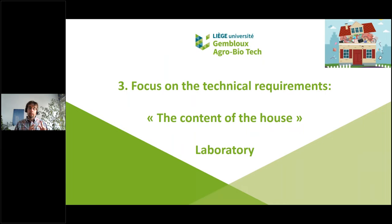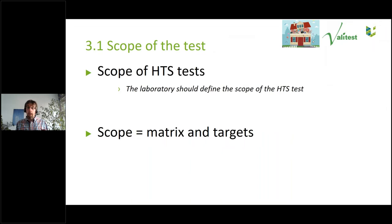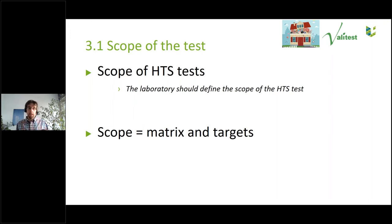Moving to technical requirements — the content of the house — first in the laboratory you must define the scope of your test: on which matrices and targets will I work? For example, using HTS for certification of grapevine, post-entry quarantine of any plants, or certification of potato. Defining the scope clearly will influence everything else: the extent of validation, the controls, and so on. It seems a simple step but it is very important because everything flows from it.